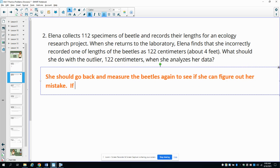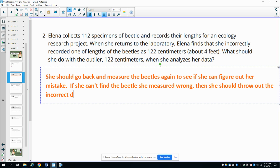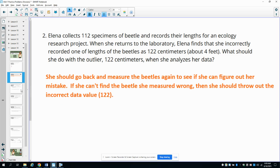If she can't find the mistake and find the beetle that she measured wrong, then she should throw the data out—the 122, so the outlier. Go back and measure, see if she can figure out where the mistake is. If she can't find which one was wrong, then she should just throw the outlier out of her data.